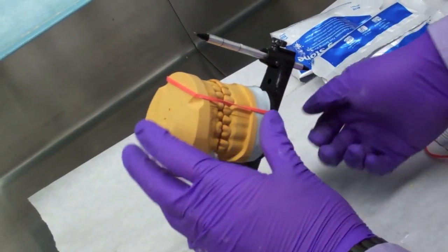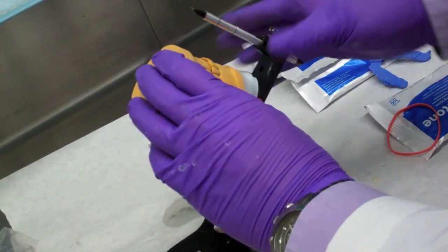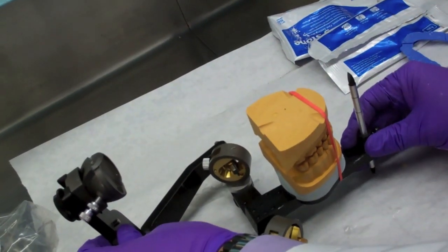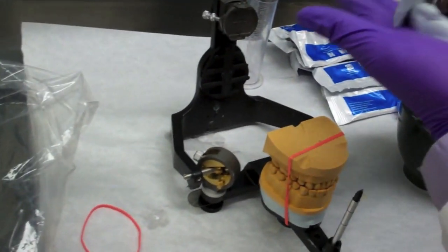We now remount the maxillary cast onto the articulator. With the rubber band in place, the mandibular is in occlusion with the maxillary. Make sure that the rubber band is not in the way of the indexes made on the bottom of the mandibular cast.